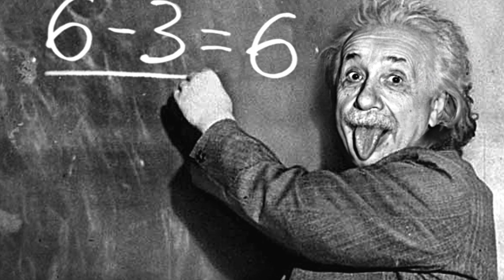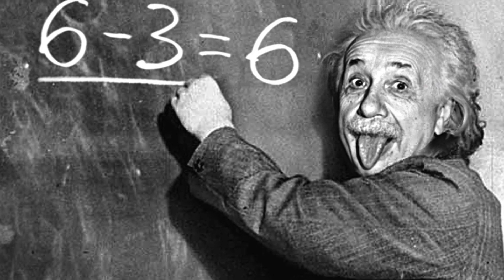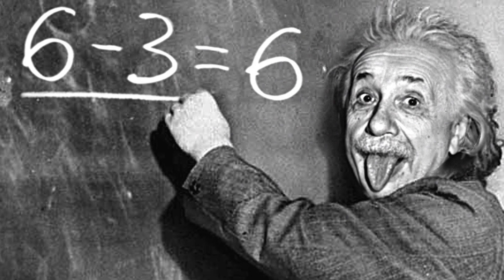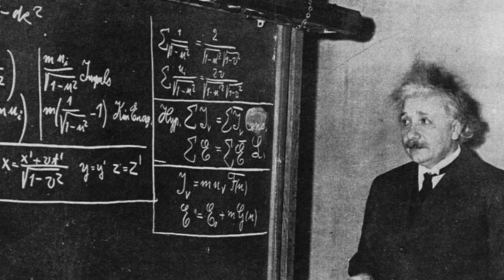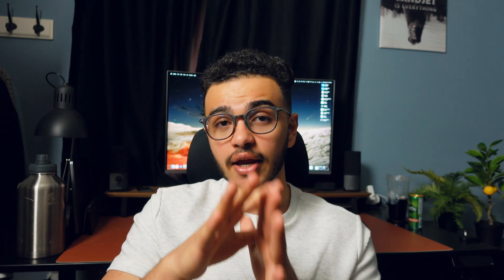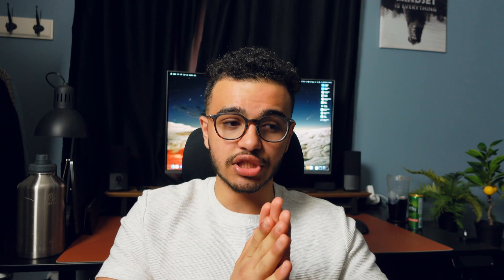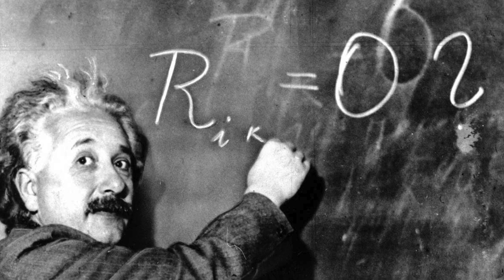Albert Einstein used to study in a very unorthodox way. He did not like going to classes, rereading notes, or going through textbooks. What he liked doing is taking equations from current mathematicians and physicists in his time, playing around with them, and basically trying to find other equations that would work. He would essentially solve problems that weren't originally problems — he would go out and hunt for the problem and then solve it.